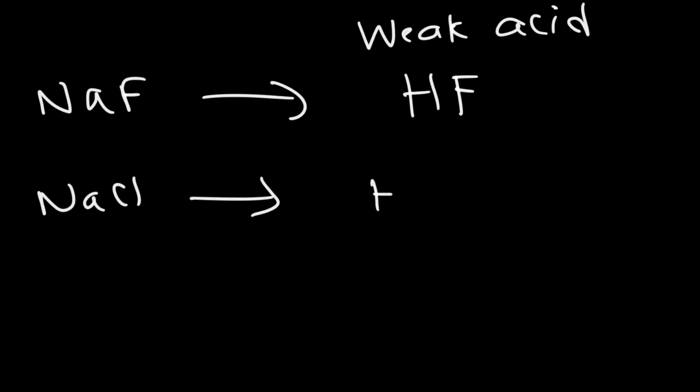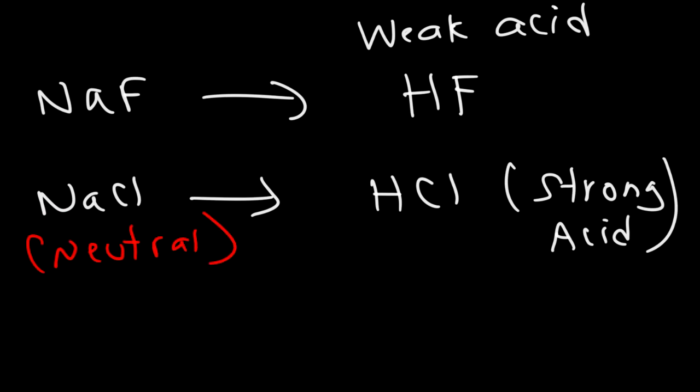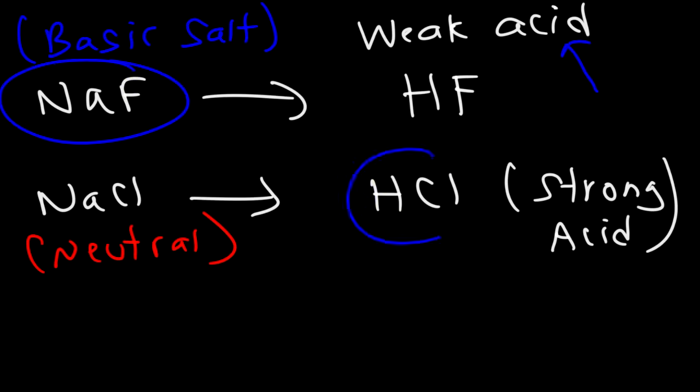NaF is the conjugate of a weak acid. NaCl is the conjugate of a strong acid. The conjugate base of a strong acid is so weak that it's going to be neutral in solution. The conjugate base of a weak acid produces a stronger base, such that it's strong enough to affect the pH of a solution. So the pH won't stay at 7. So thus, it's going to be a basic salt. And that's how you can tell if a salt is going to be basic or if it's going to be neutral. It's by looking at the conjugate acid. If the conjugate acid is a weak acid, then this is going to be a basic salt. If it's a strong acid, it's going to be a neutral salt.